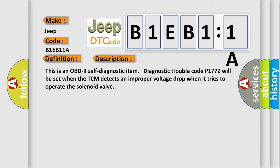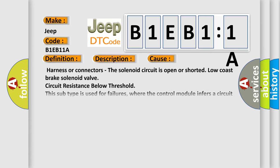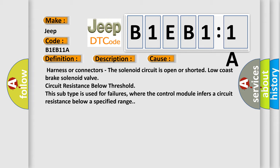This diagnostic error occurs most often in these cases: Harness or connectors, the solenoid circuit is open or shorted, low-cost brake solenoid valve circuit resistance below threshold. This subtype is used for failures where the control module infers a circuit resistance below a specified range.